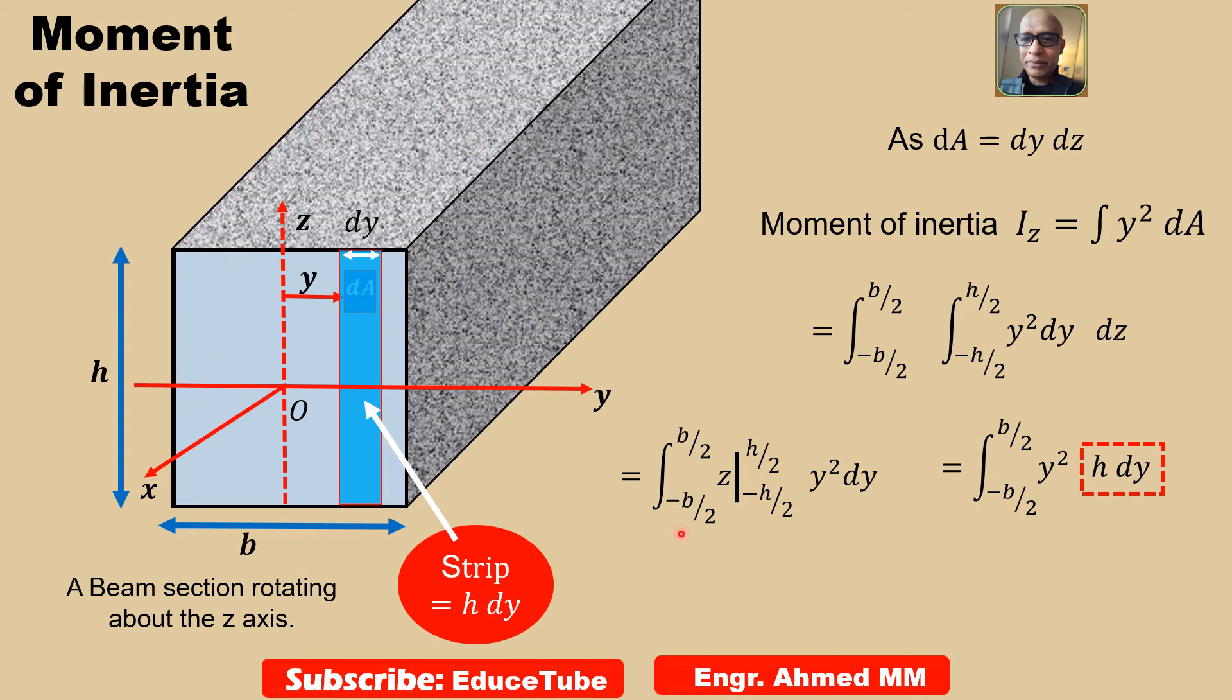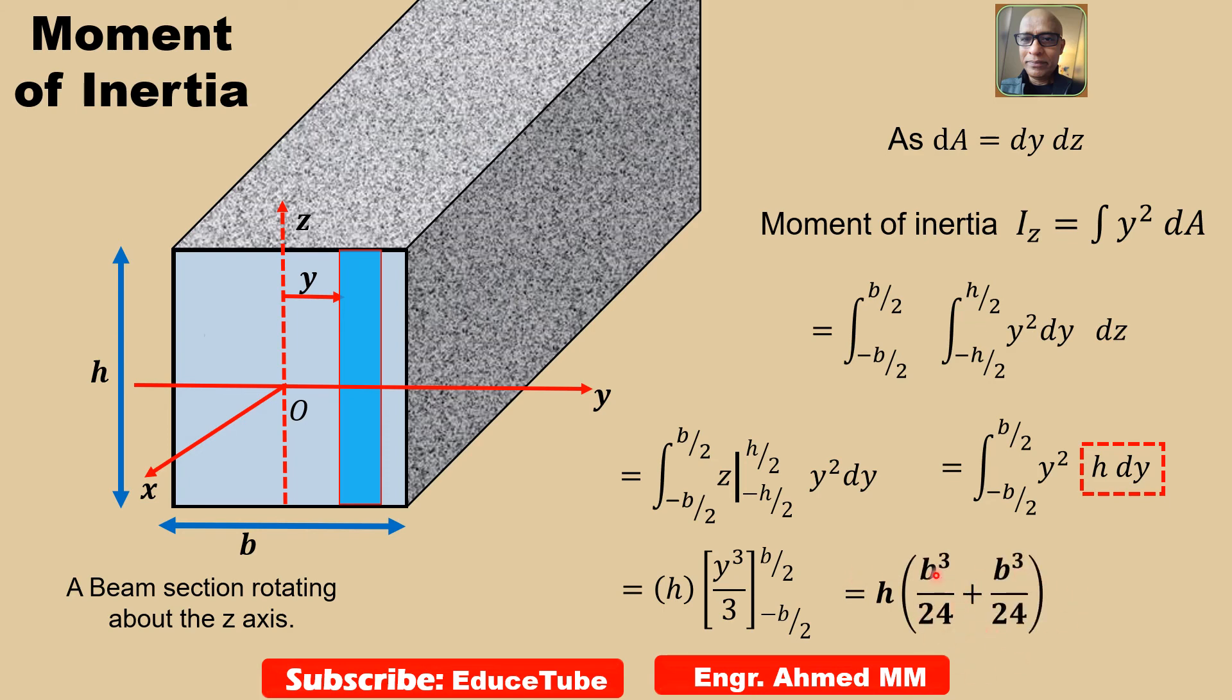But we need whole area. So we have to do integration, second integrations. After doing second integration we get y cubed by 3, because y squared after integration y cubed by 3. Putting the upper limit and lower limit we will get this. This is the result after second integration. And this result means it will cover the whole area because first integration we got only this strip, but after second integration this value will cover the whole area. And we got our formula as h b cubed by 12.